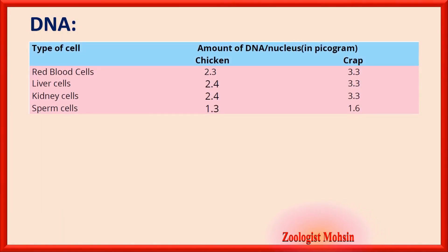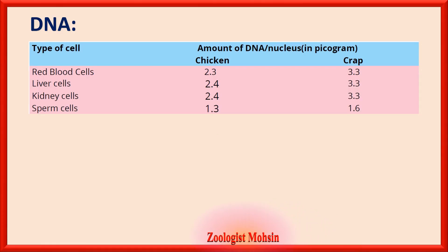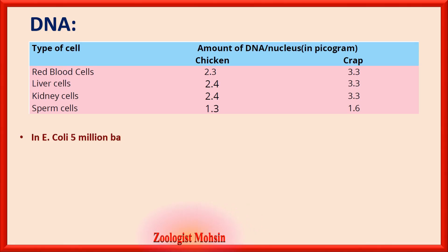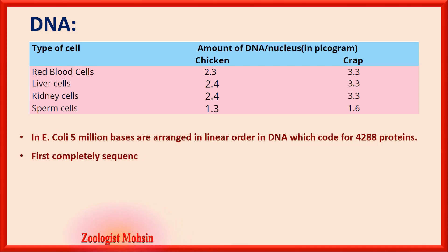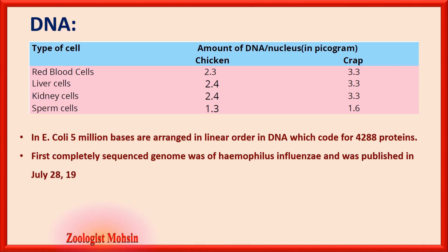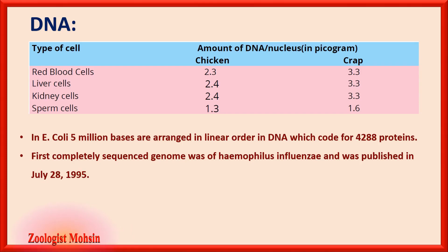Different cells contain different amounts of DNA measured in picograms — for example, chicken RBCs contain 2.3 picograms and carp RBCs contain 3.3 picograms. In E. coli bacteria, 5 million bases are arranged in linear order in DNA, coding for around 4,288 proteins. The first completely sequenced genome was that of Haemophilus influenzae — a very famous MCQ asked many times — published on July 28, 1995.